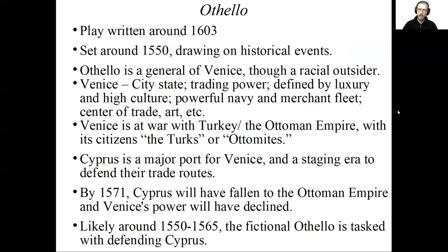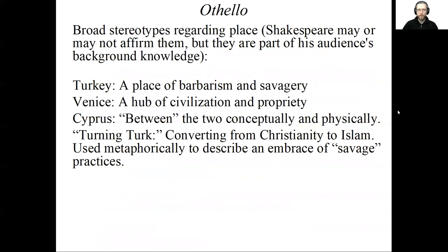When we look at a map of the region, you'll see why that would be the case. We know this play has to be set before 1571, because in 1571 the Turks actually successfully captured Cyprus. Venice, after this point, will start to decline as a regional power. A few basic notes regarding stereotypical views in Shakespeare's era — particularly in the Venetian nation as they are thinking about themselves and the rest of the world. Many of the Europeans and Venetians in this story would view Turkey as a place of barbarism and savagery. It is not a Christian nation; it is a heathen nation. So there's a cultural, racial, and religious divide between Turkey and Venice, and as a result they view Turkey as a place of unbridled violence and animality.